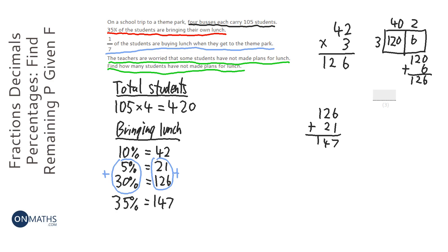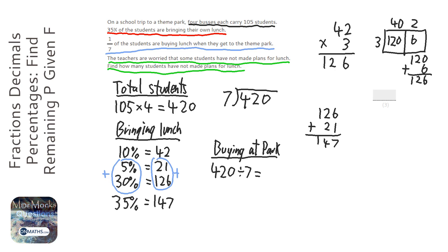Next, buying at park. Students who are buying at the theme park, it says a 7th of the students. So to find a 7th, all we do is we get the amount of students, which is 420, and we just divide it by 7. You can do this any way you feel comfortable doing, although this is a bit easy, because 42 divided by 7 we know is going to be 6. So 7ths into 4 don't go, so carry that on. 7ths into 42 are 6, 7ths into 0 are 0, so it's going to be 60.